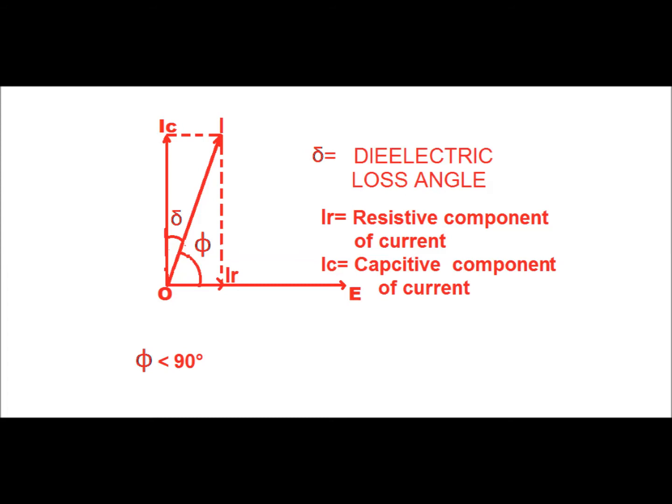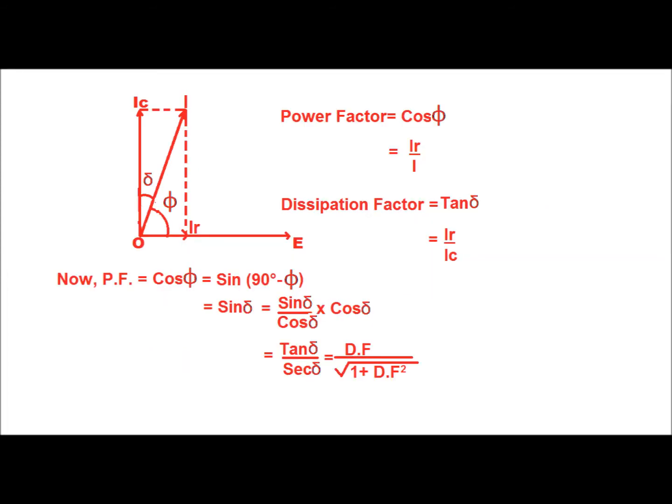In the practical case, the power factor angle phi is not 90 degrees — rather it is less than 90 degrees. The practical diagram has been shown in this figure. In this figure, IR is the resistive component of current, I is the resultant current, and phi is the power factor angle. The delta angle is called the dielectric loss angle. The more the insulator deteriorates, the more the angle delta becomes. From this vector diagram we can see that power factor equals cos phi equals IR divided by I.